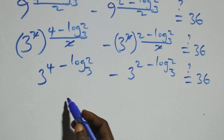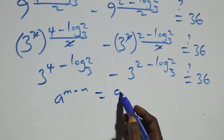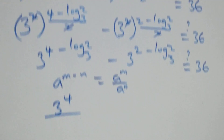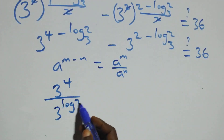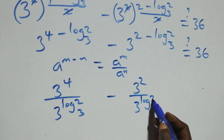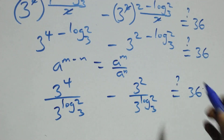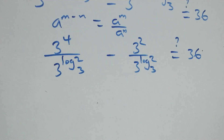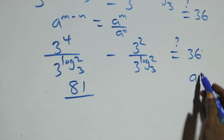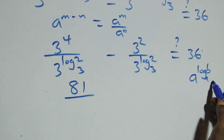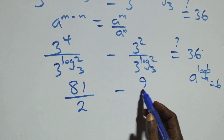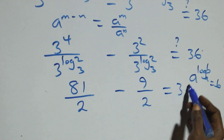We apply the indices law: a^(n-m) = a^n / a^m. This gives 3 raised to power 4 divided by 3 raised to power log₃2, minus 3 squared divided by 3 raised to power log₃2, equals 36. Since 3^4 is 81 and using the identity a^(log_a b) = b, we get 81/2 minus 9/2, equals 36.